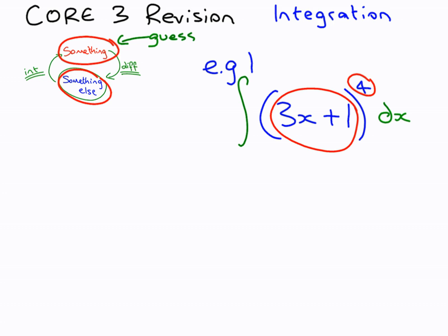So let's guess something to the power of 5, because when we differentiate we're going to decrease the power. And what we're going to guess is the same thing in the bracket. So, 3x plus 1 to the power of 5.